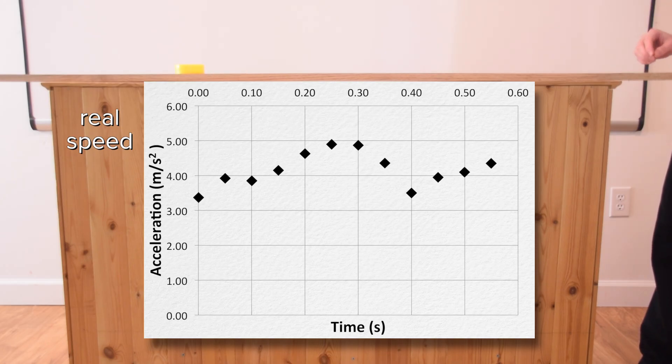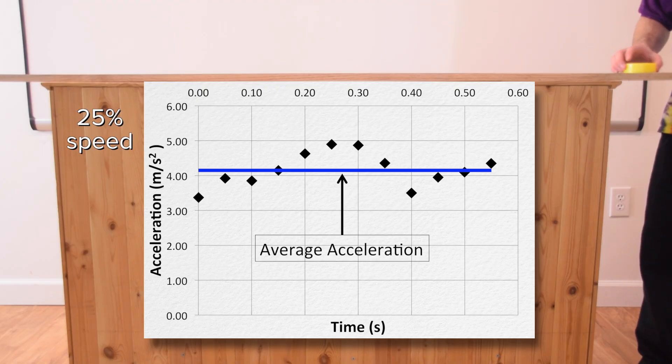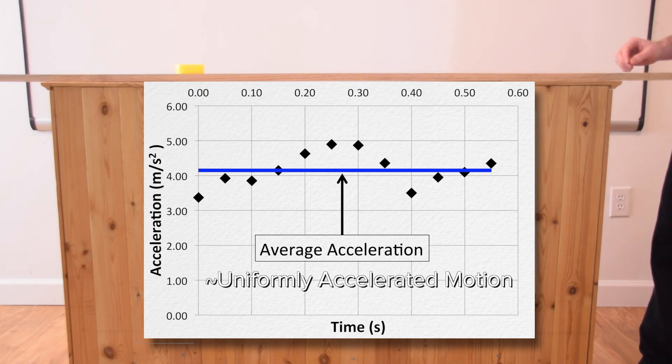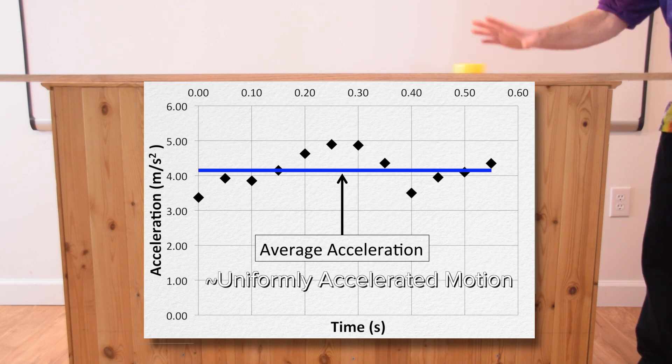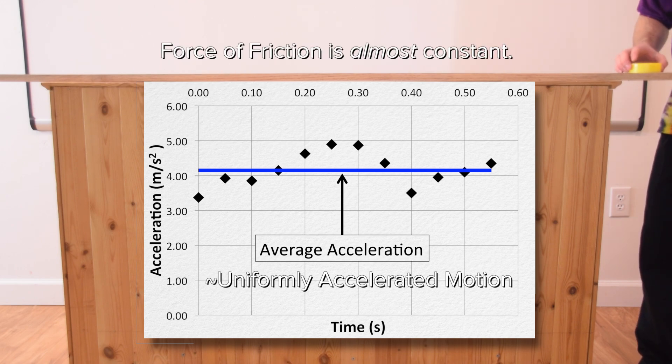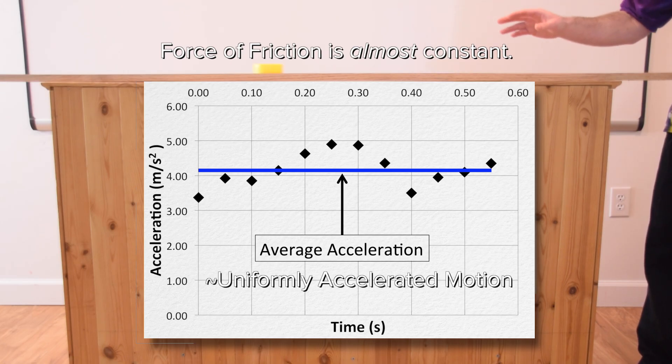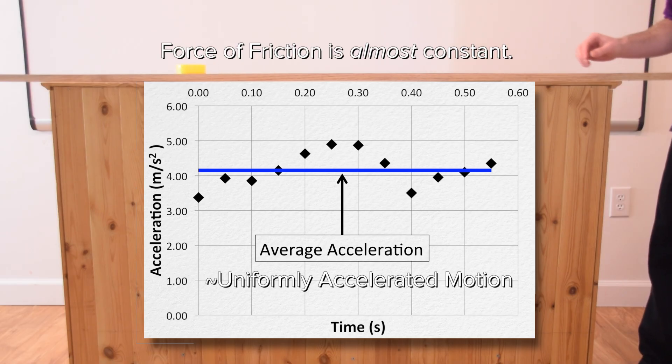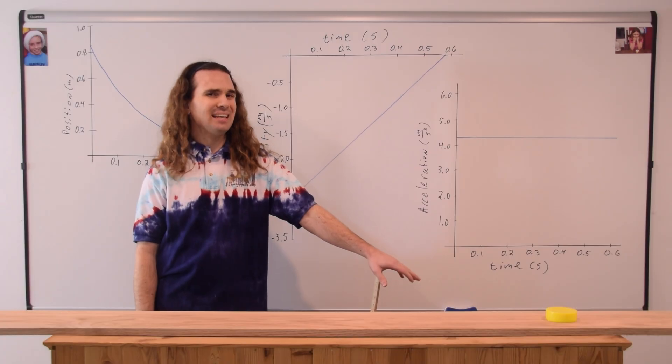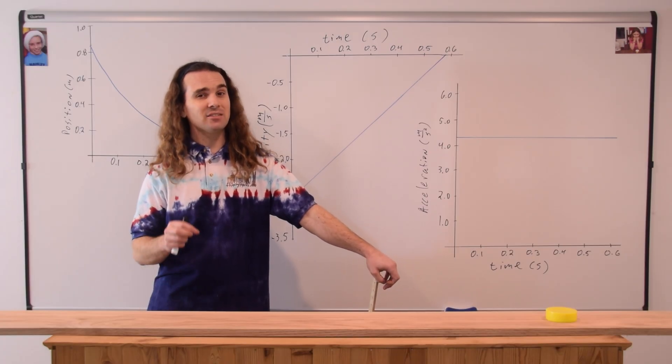It turns out the acceleration isn't quite constant. We can determine an average value for the acceleration and approximate this as uniformly accelerated motion. However, it's not quite UAM. The reason for that is the force of friction, which is causing the acceleration of the puck, isn't quite constant. We could model this motion as UAM pretty well using the average acceleration value. However, it is important to understand that that is an approximation.